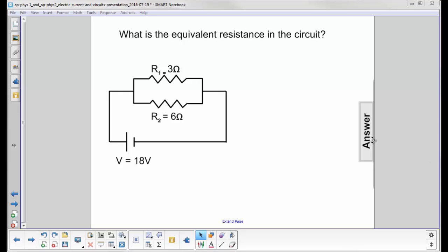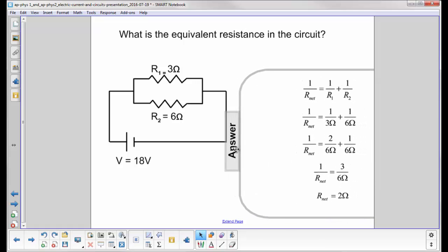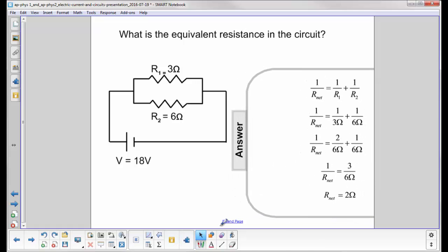What is the equivalent resistance in this circuit? First thing we note, this is a parallel circuit because I cannot draw one continuous loop from the battery through the resistor and cover both resistors and get back to the battery.